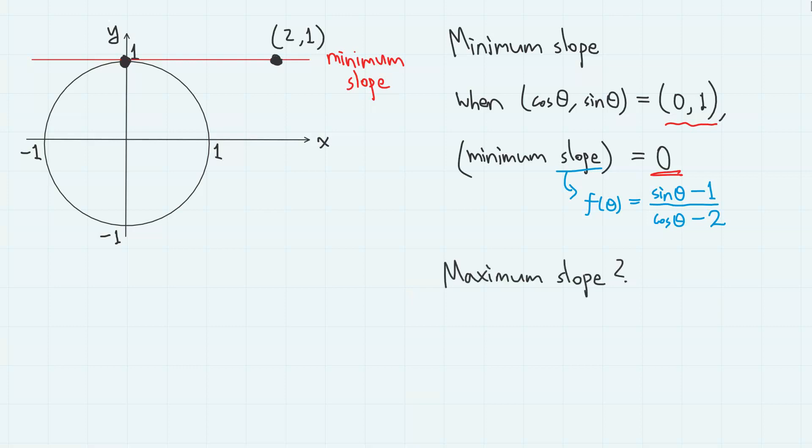What about the maximum value of the slope? Well, as you can infer from the graph, the slope becomes maximum when the line connecting two points is another tangent to the unit circle.